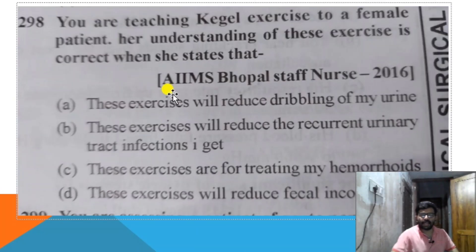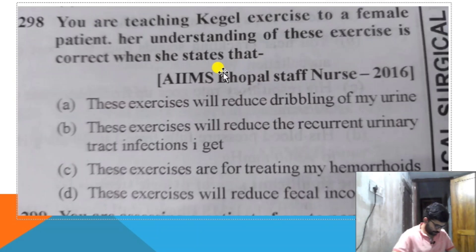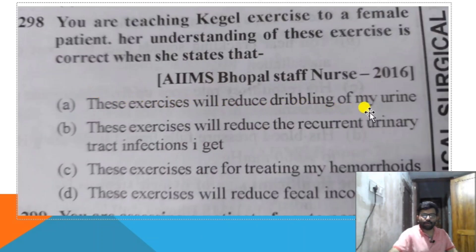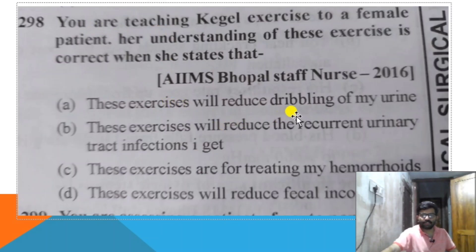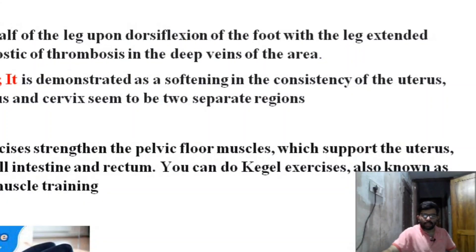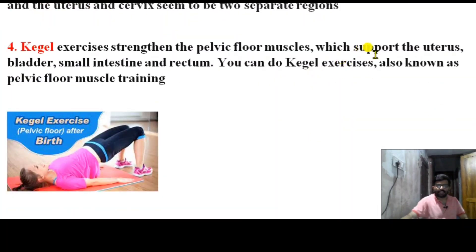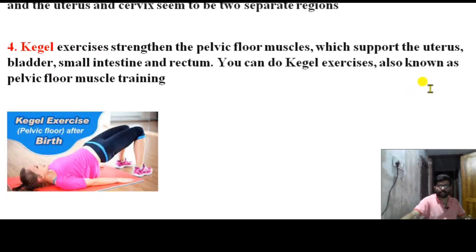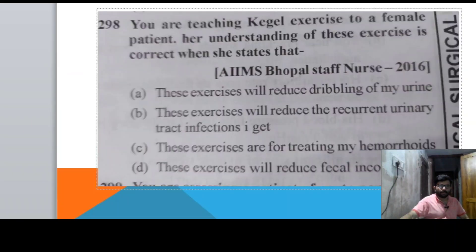Next question: you are teaching Kegel exercises to a female patient. Her understanding of this exercise is correct when she states that this exercise will reduce dribbling of urine. Kegel exercises strengthen the pelvic floor muscles, which support the uterus, bladder, small intestine, and rectum. Kegel exercise is also known as pelvic floor muscle training.